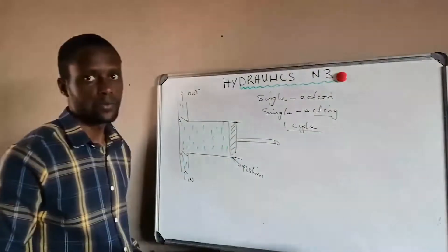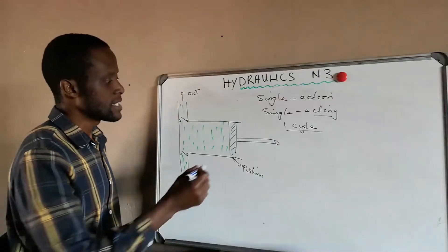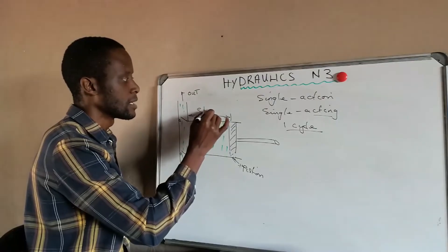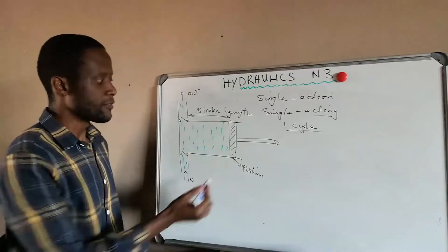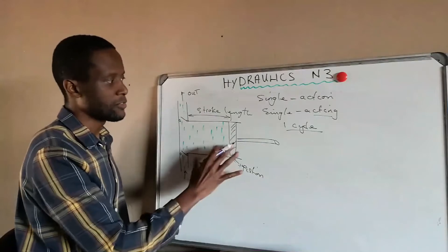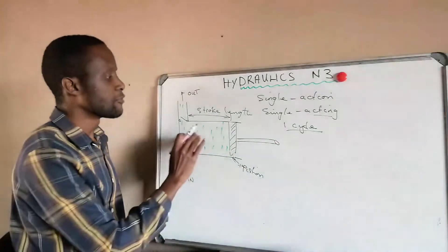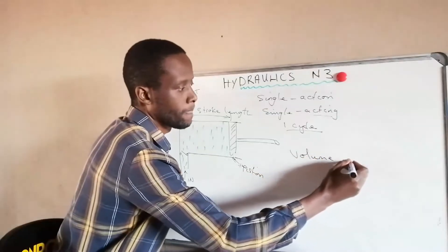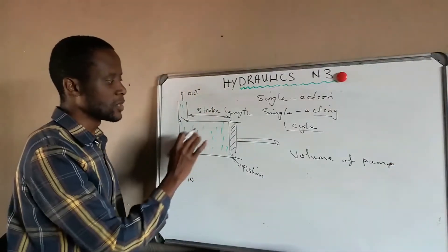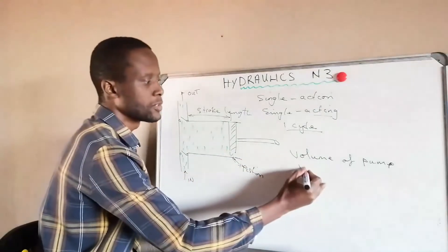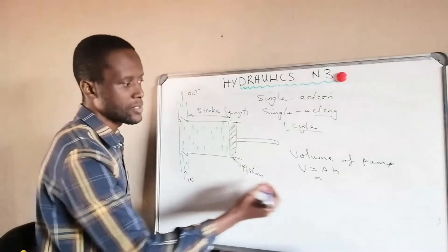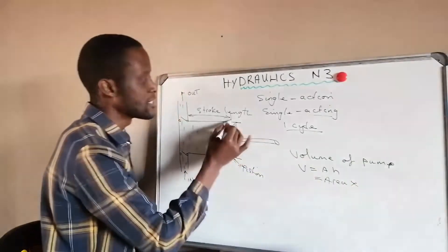One cycle is the piston going in and out. The distance that the piston moves is called the stroke, or stroke length. If the piston moves from one point to another, it has made one stroke; going back just fills the chamber, completing that one cycle. The volume of the pump is how much liquid is contained in that chamber: volume equals the area of the piston times the stroke length.